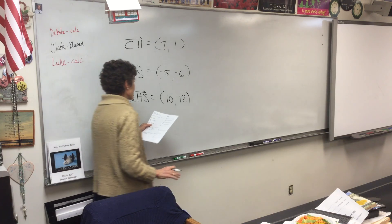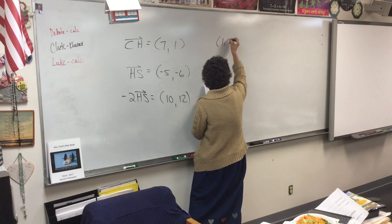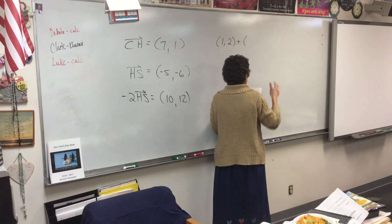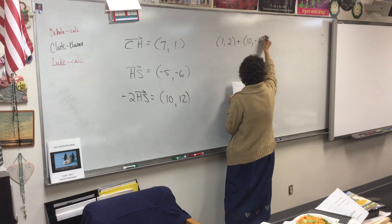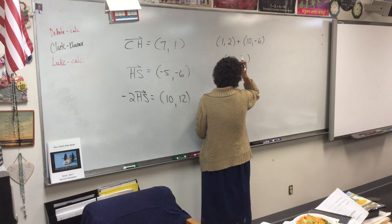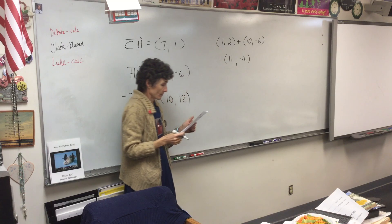V plus two U. Well, V is one, two. What would two U be? Ten, negative six. So when I add those together, I get eleven, negative four.